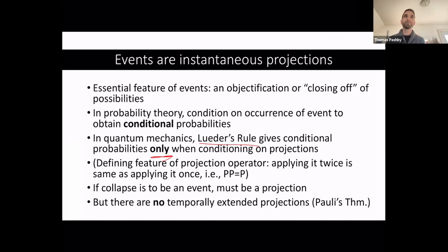Unfortunately, that gives conditional probabilities only when conditioning on projections. Well, fortunately, it's a nice result in a way. What is a projection? Well, it's an operator that when you operate on a quantum state, if you do it once, it's the same as doing it twice. So PP equals P. That's all there is to being a projection operator. So if collapse is to be an event, this process one is to be an event, it has to play this role of objectification limitation. So it must be a projection, but there are no temporally extended projections. So that's related to a result called Pauli's theorem, also closely related to the quantum Zeno effect. So what that means is we've got collapse at an instant of time.